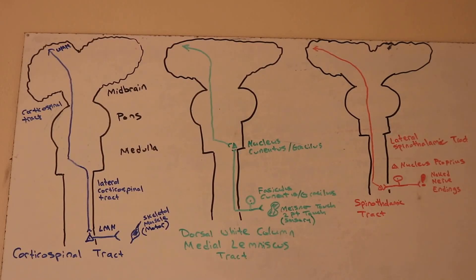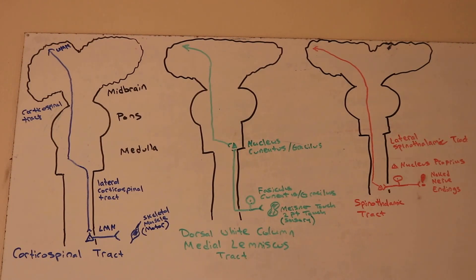We're going to go over the three main tracts in neuroanatomy. On the left side you have your corticospinal tract in blue. In the middle in green you have your dorsal white column medial lemniscus tract. And in red you have your lateral spinothalamic tract for pain.